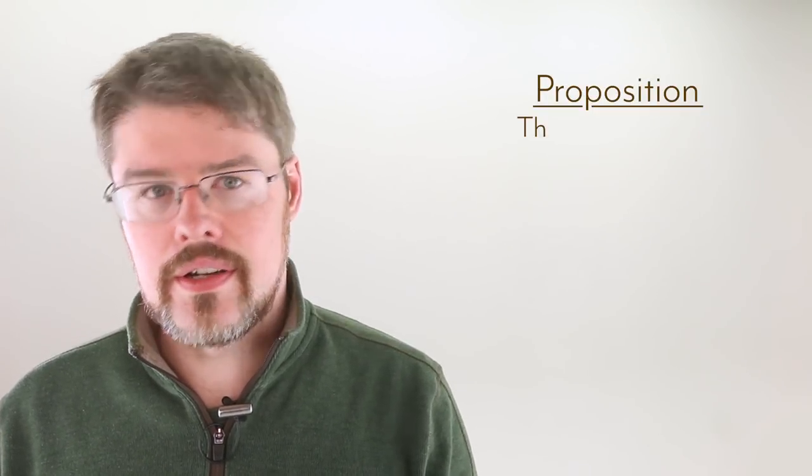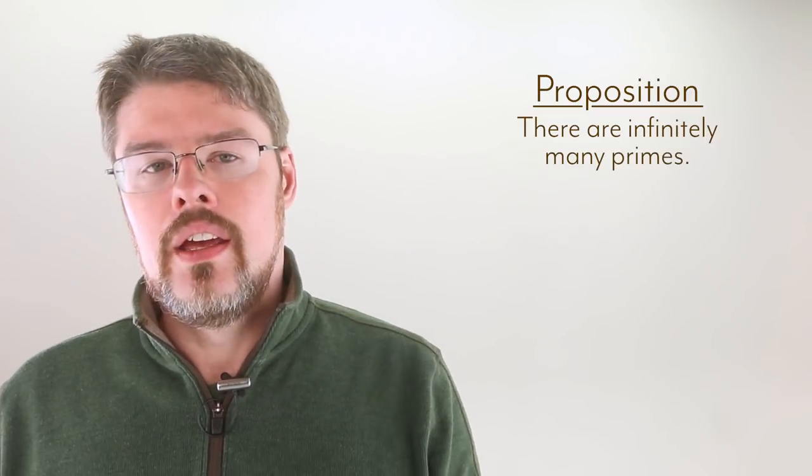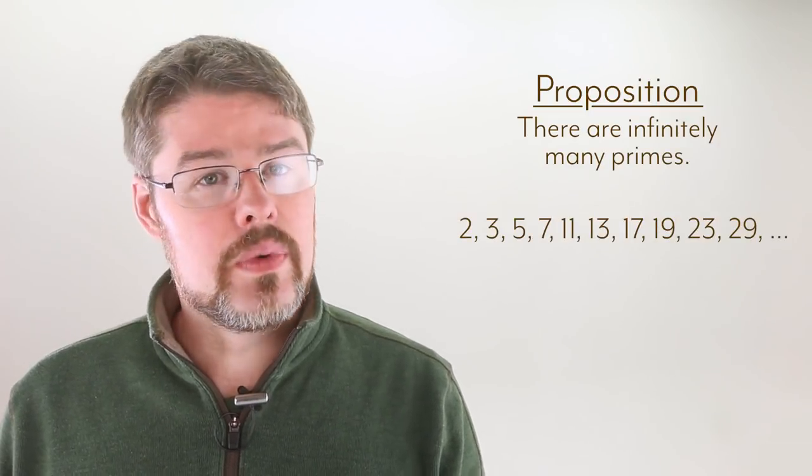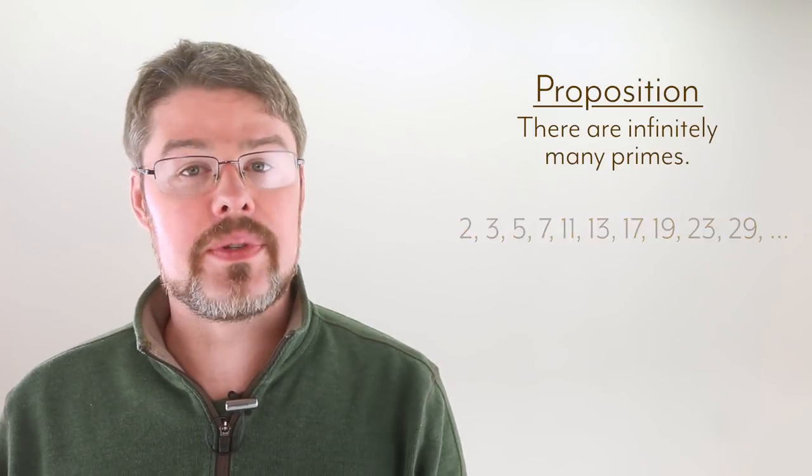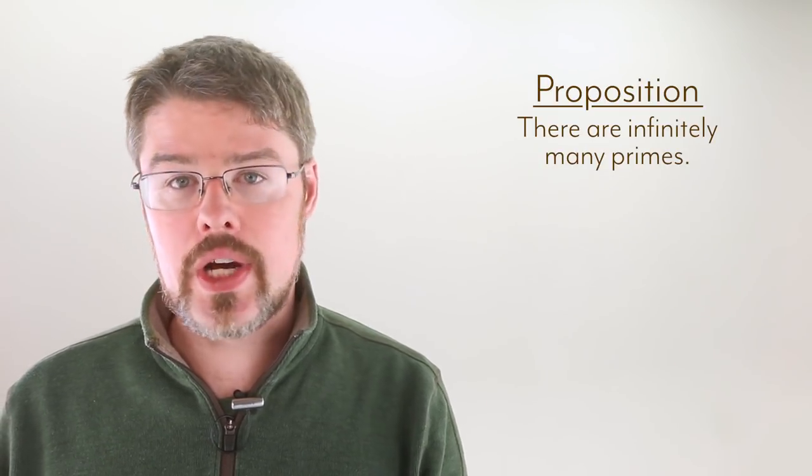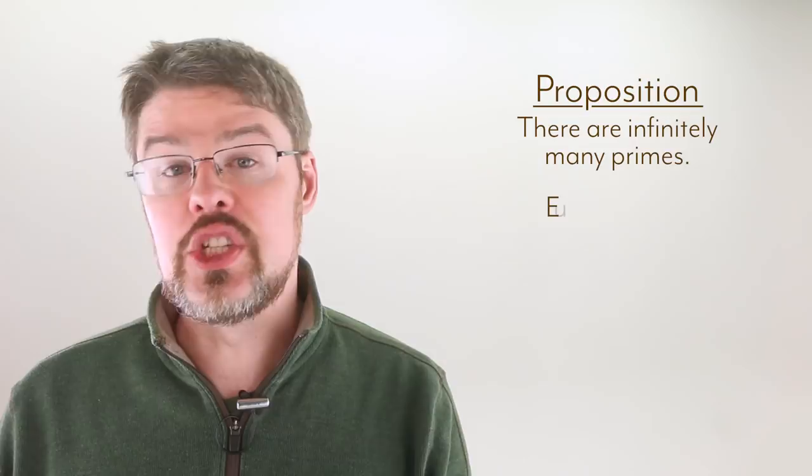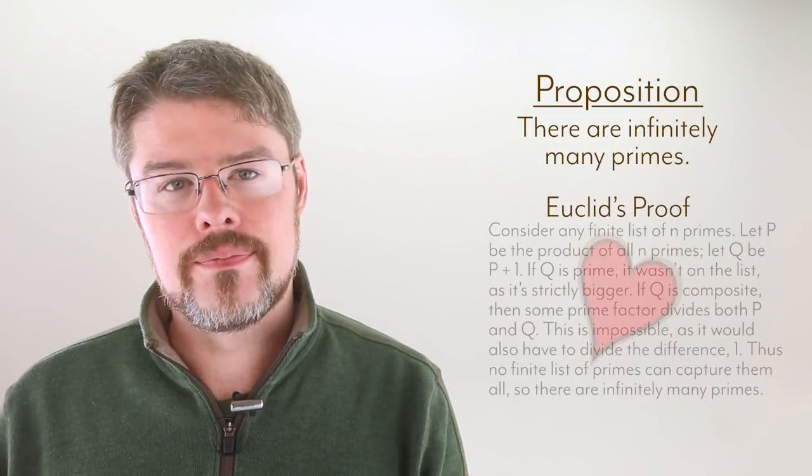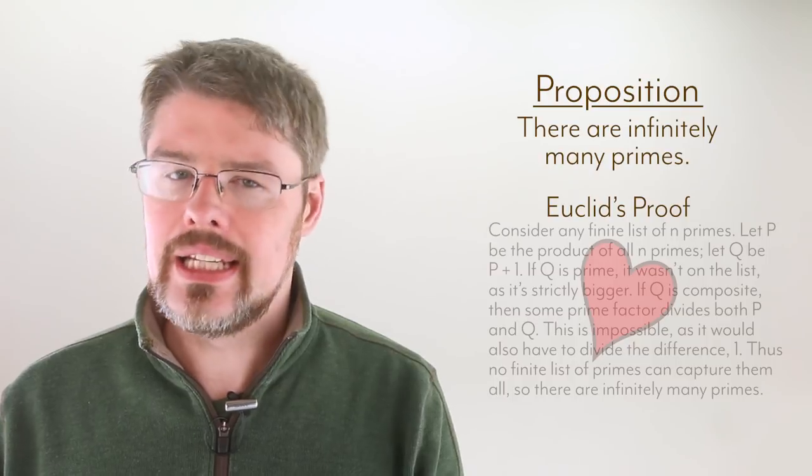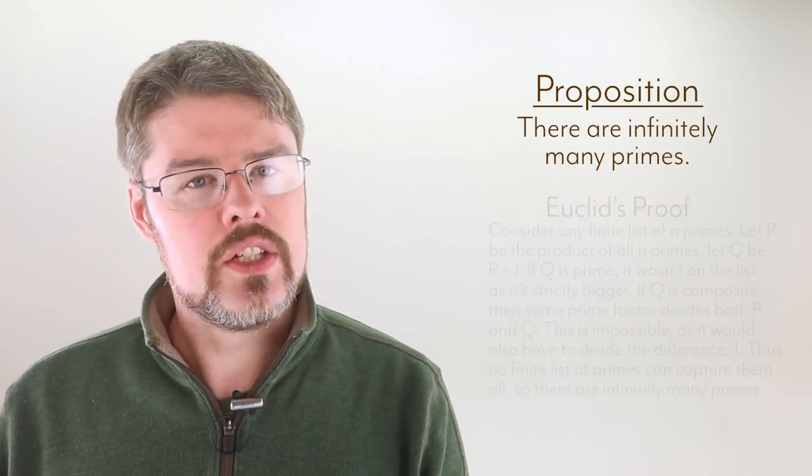Back to the proof. So now we can understand the proposition, which is there are infinitely many primes. Here are the first few, starting with the number 2, which is the first prime number. In proving this proposition, I'm going to be basing my strategy on the method outlined in Euclid's proof of this. As for me, I find it to be the most attractive. It won't be the exact same proof, but it'll have the same spirit.